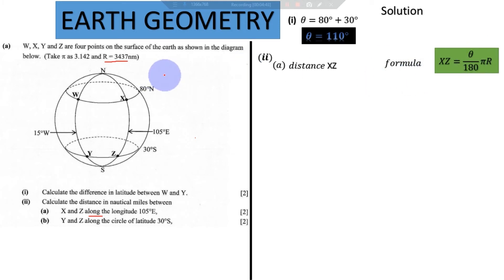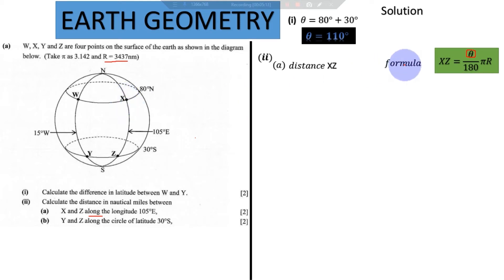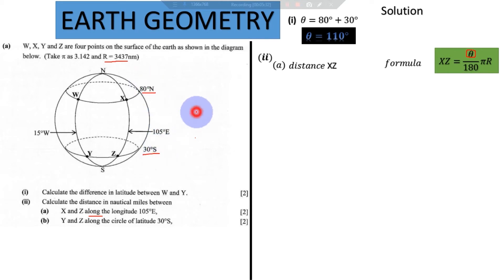Pi and R have been given. What about theta? We go back to our question: since X and Z are on the same longitude but different latitudes, we find the difference in their latitudes — that becomes our theta. X is at 80 degrees North and Z is at 30 degrees South. North and South are different poles, so we add: 80 plus 30 gives us theta = 110 degrees.